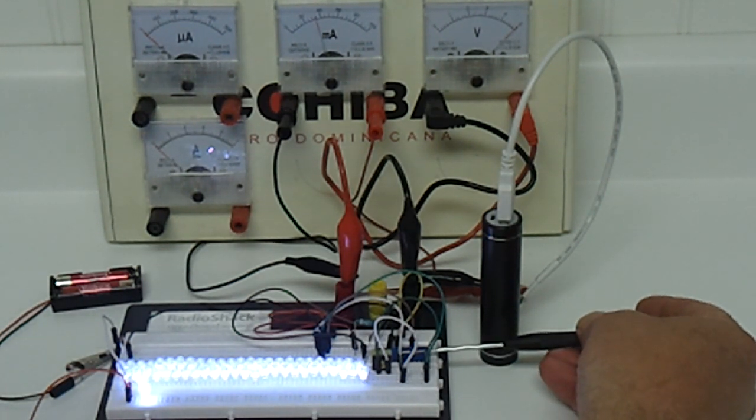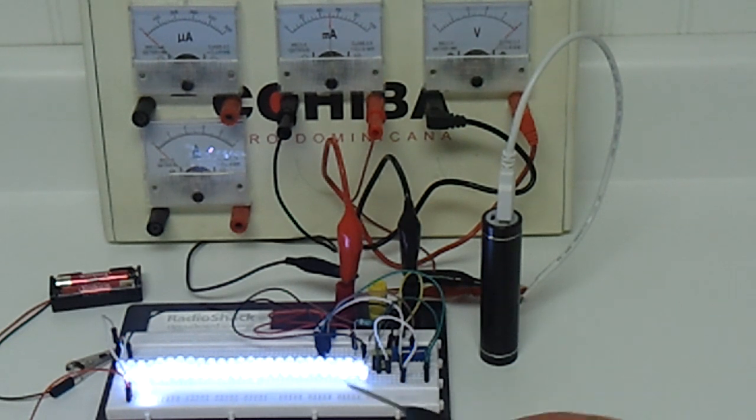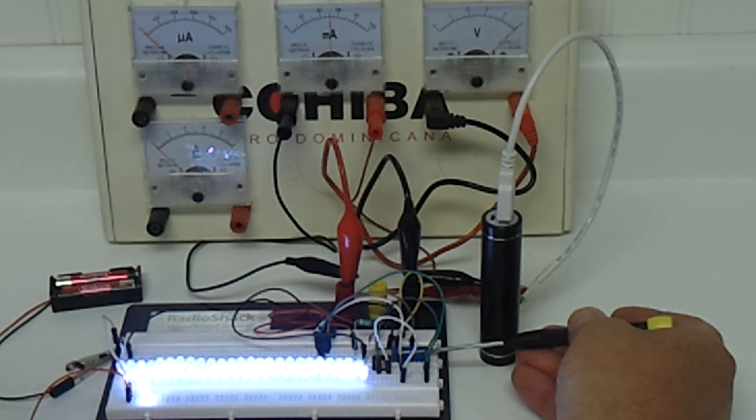If I run that current up to about 50 milliamps, right about there, then it appears to be about the same brightness as my control LED. Now with the way I've got this circuit set up right now, if I remove all the resistance I can off of this, it's going to go up to just about 80 milliamps.